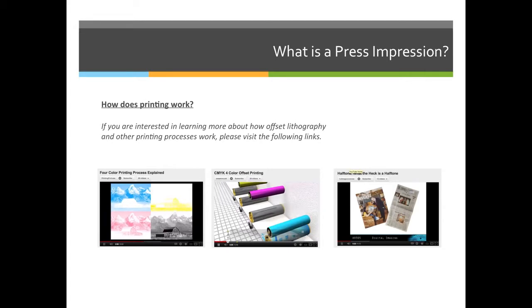I would like to watch a few videos on how printing works. You can either watch along with me, or you could exit this video and if you download this slideshow, you can just click on the video you'd like to watch. The first video is going to explain how four color process printing works — that is cyan, magenta, yellow, and black — and those are the traditional printing process colors.